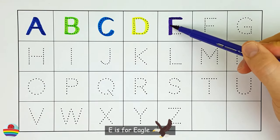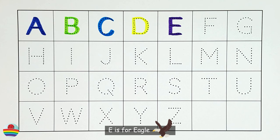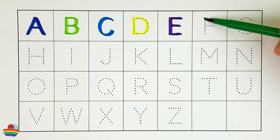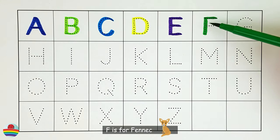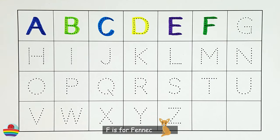E. E is for eagle. E. F. F is for fennec. F.